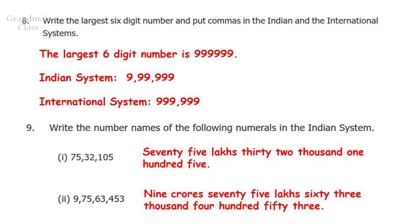Question 9: Write the number names of the following numerals in the Indian system. The first number can be written as 75,32,105. And the second number can be written as 9 crores, 75,63,453.